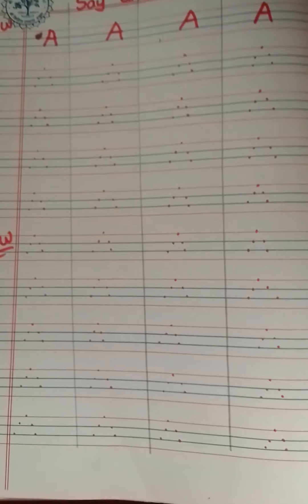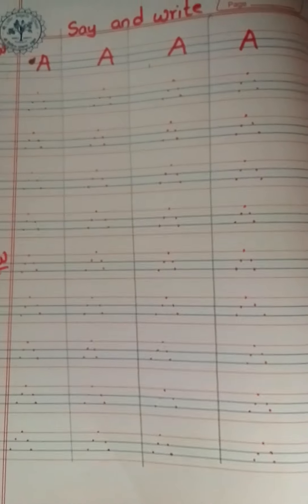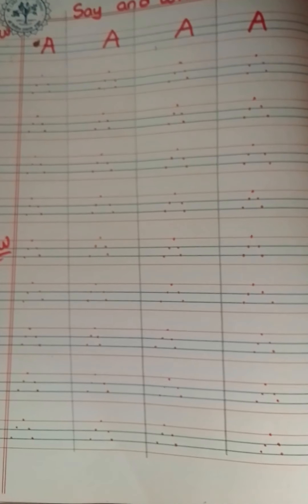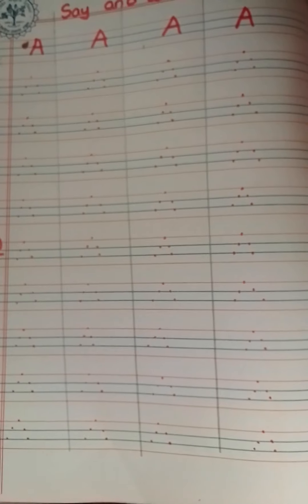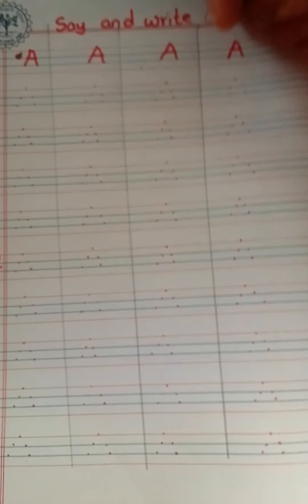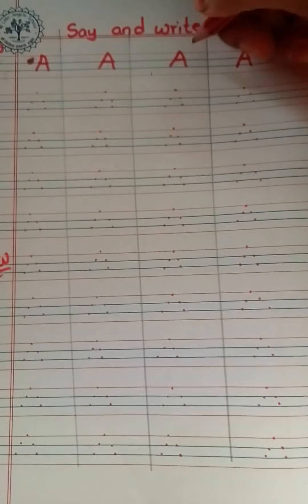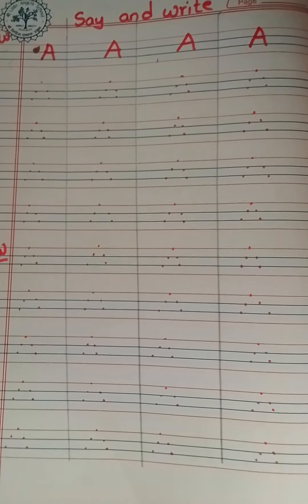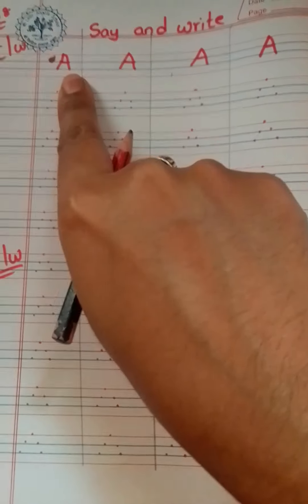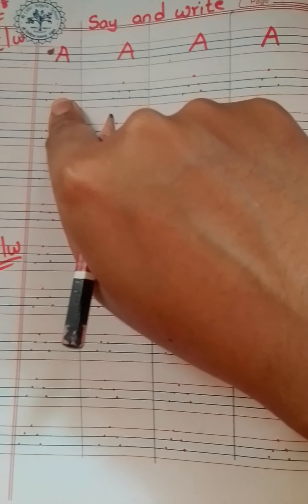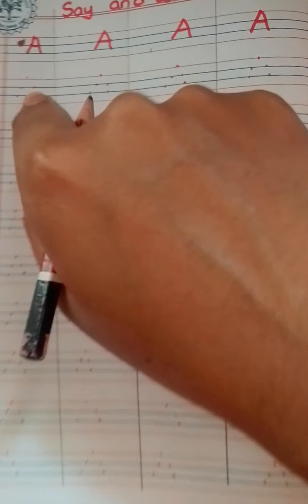Hi children, good morning! Today we are going to trace the letter A in four lines. Till now we have traced big A. Right from today we learn how to trace between the four lines. Shall we do it? See, ma'am has written for you over here. Ma'am has given you dots. First I will explain what these four lines are.